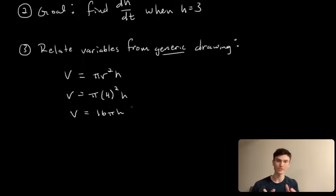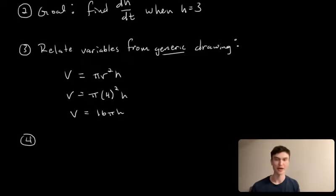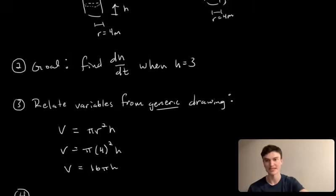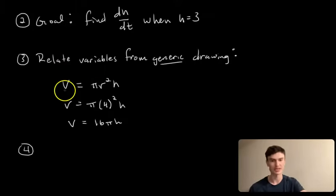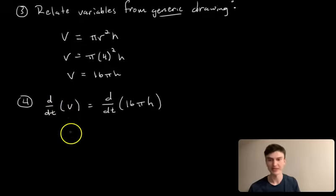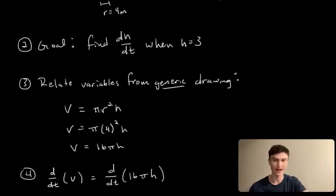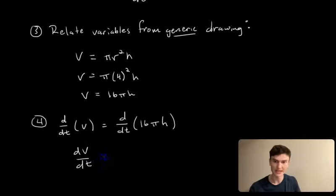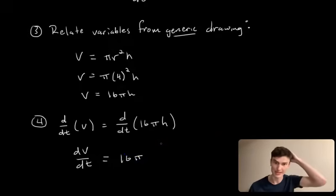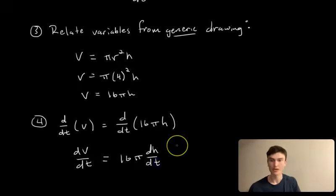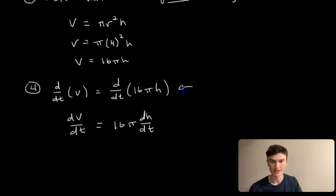Step 4: once you've related your variables, differentiate with respect to what makes sense in the problem. Since our goal is dh/dt, we differentiate with respect to time. Taking d/dt of both sides: the left side gives dV/dt, and the right side gives 16π·dh/dt, since 16π is constant with respect to time.